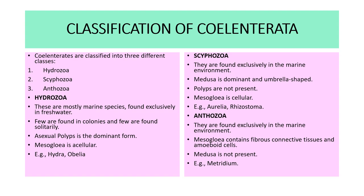The second class is Scyphozoa. They are found exclusively in the marine environment. Medusa is the dominant form and is umbrella-shaped. Polyps are not formed. Mesoglia is cellular. Examples include Aurelia and Rhizostoma.